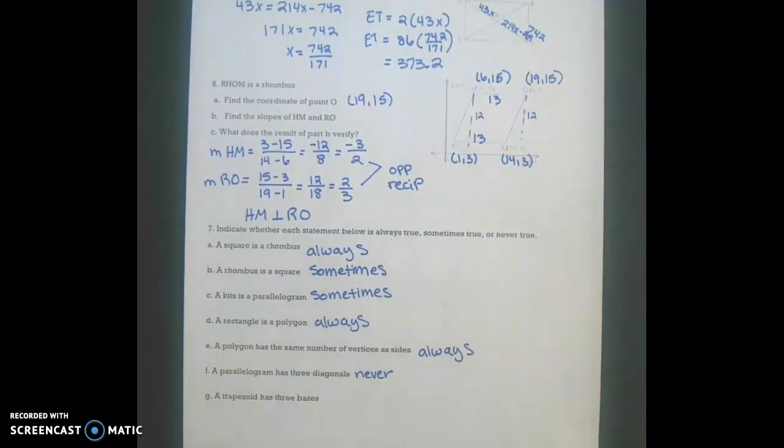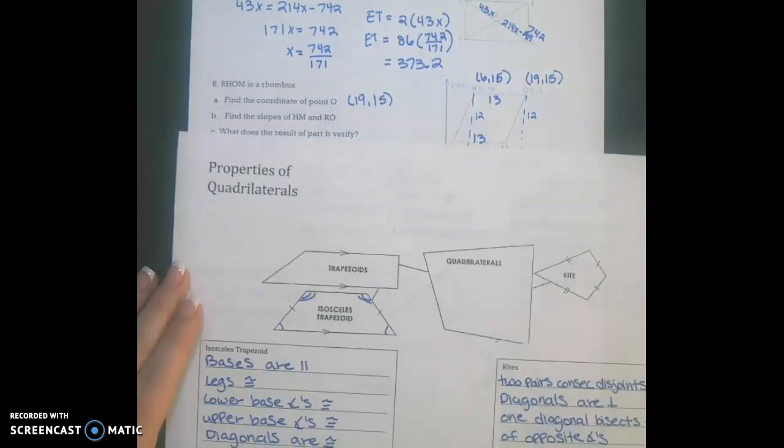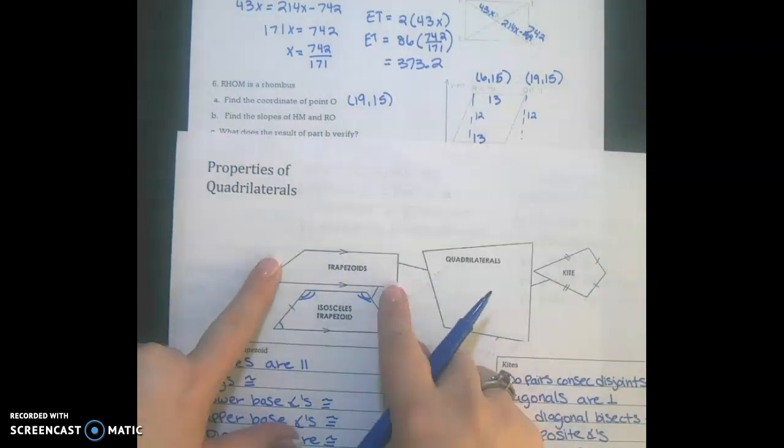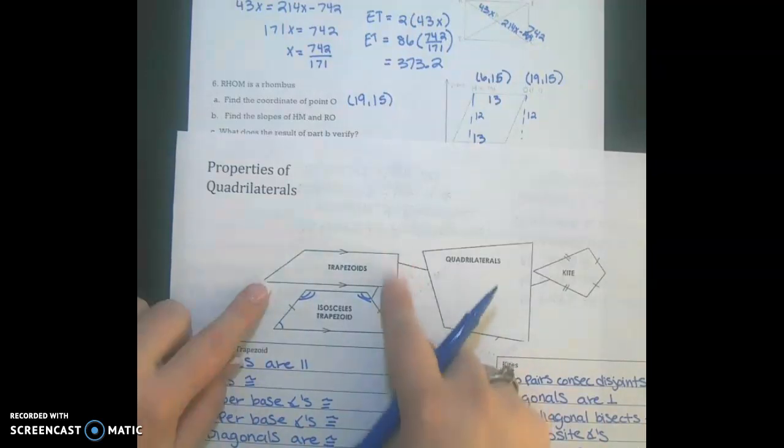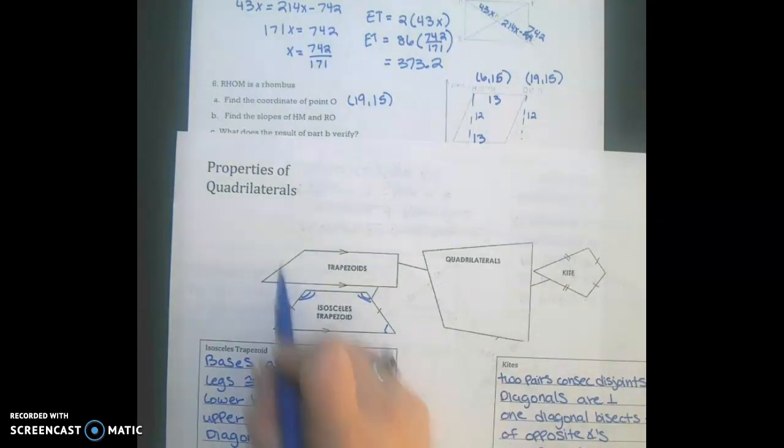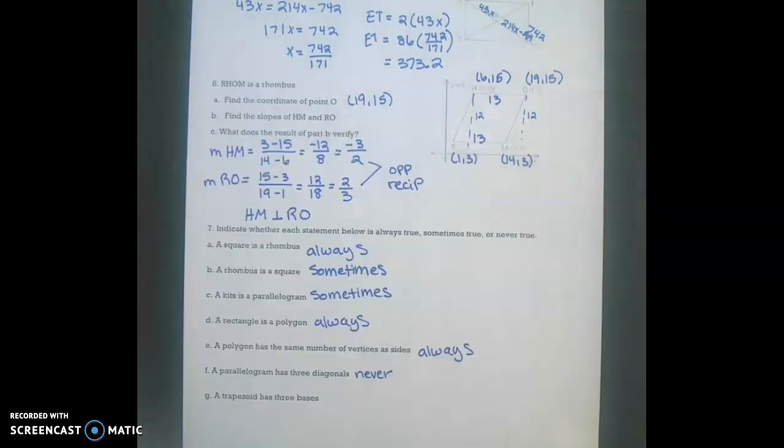And a trapezoid has three bases. Now remember our bases are just sides that are parallel to each other. So one of these sides, our parallel lines never intersect. So for another side of the trapezoid to be parallel, that would violate our rules of a polygon. So that's also a never true. And that takes care of our 5.5 notes.